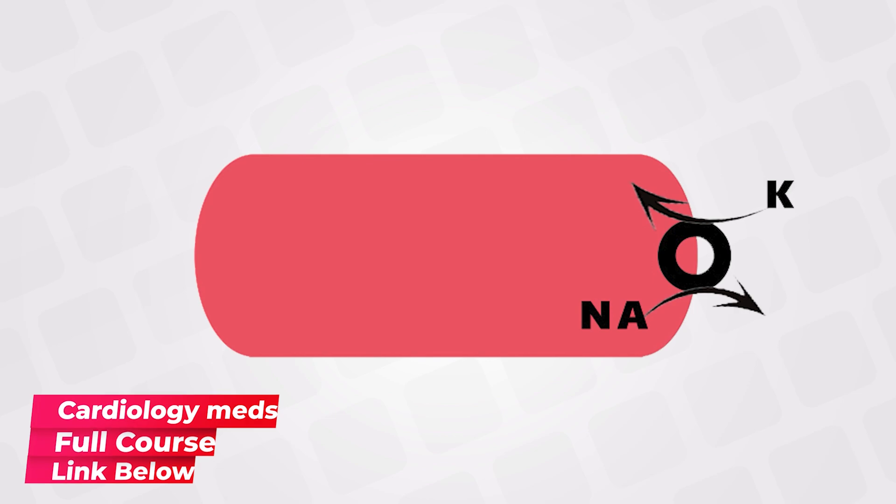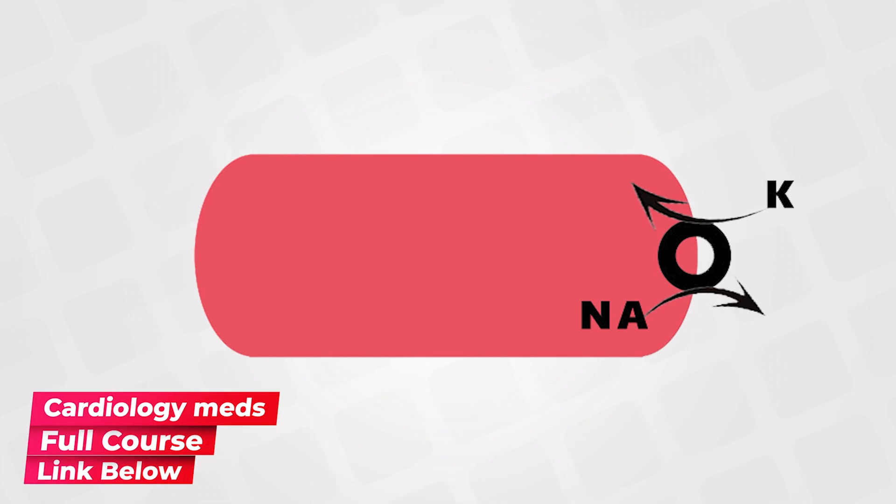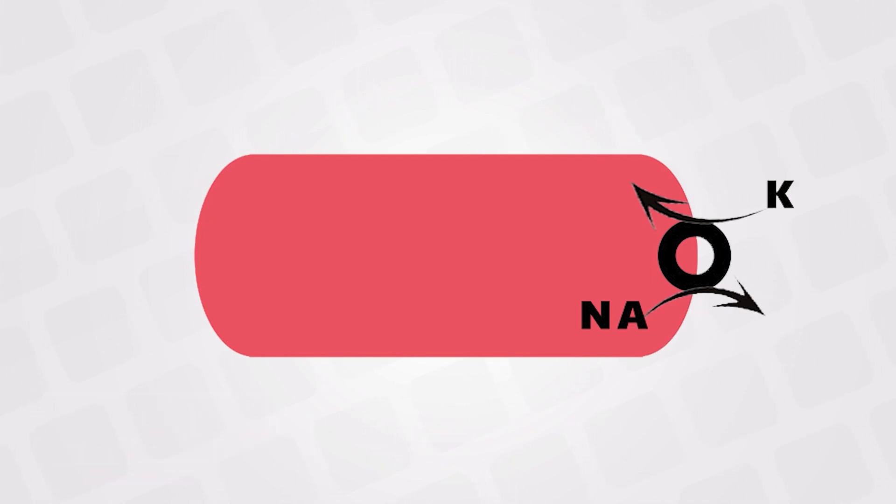To simply understand the mechanism of action, let's look at this diagram. Imagine that this is a heart muscle, and like all muscles, we have a sodium-potassium ATPase. This transporter takes potassium from the outside and puts it into the cell, and takes sodium from the inside and excretes it. So potassium goes in and sodium goes out. Normally this transporter keeps working all the time to maintain high potassium inside the cell and low sodium inside the cell.